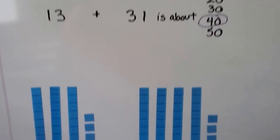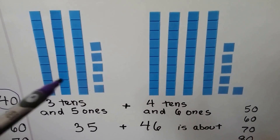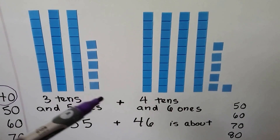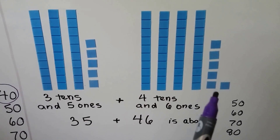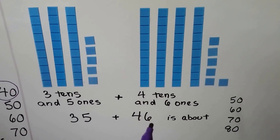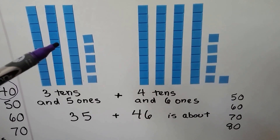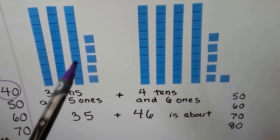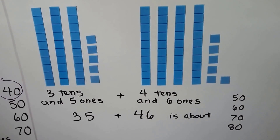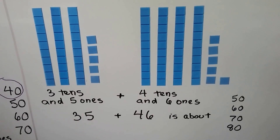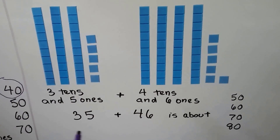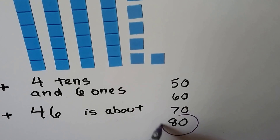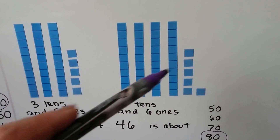Let's try another one. Now we have three tens and five ones — that's thirty-five. And we want to add it to four tens and six ones — that's forty-six. Now, we know there are seven longs of ten — so that would be seven tens. But look at the ones place. There's five here and five here. Could we make another ten out of that and go from seven tens to eight tens? Yes, we could. So thirty-five plus forty-six is about eighty. The ones place helped us make another ten.